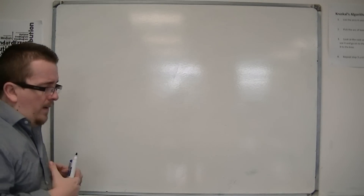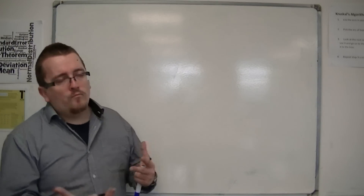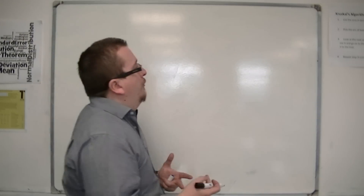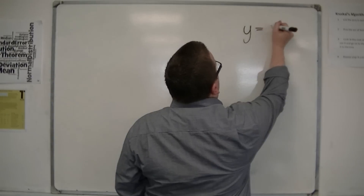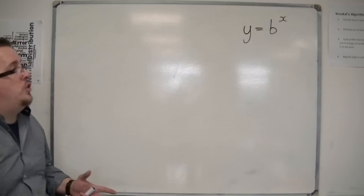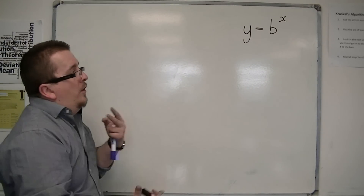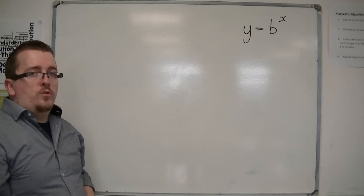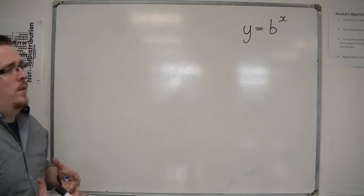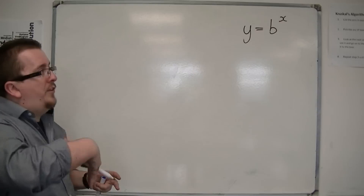We should be fully aware of how we write things in exponential notation. For example, y is equal to b to the x. This is an exponential equation. But in a lot of cases, exponential equations are quite difficult to work with, and what we would really like is a way of being able to write this in a simpler way.